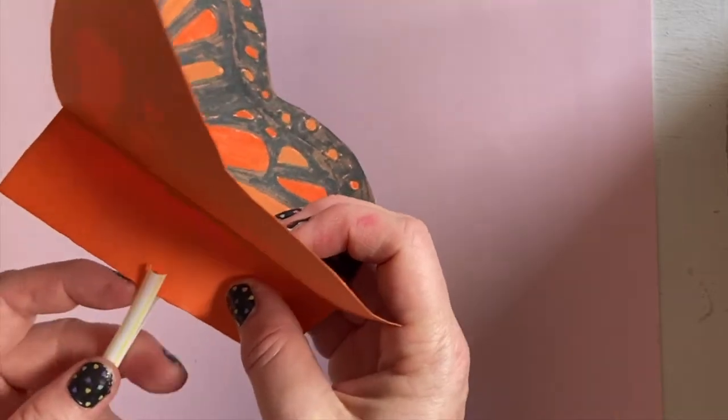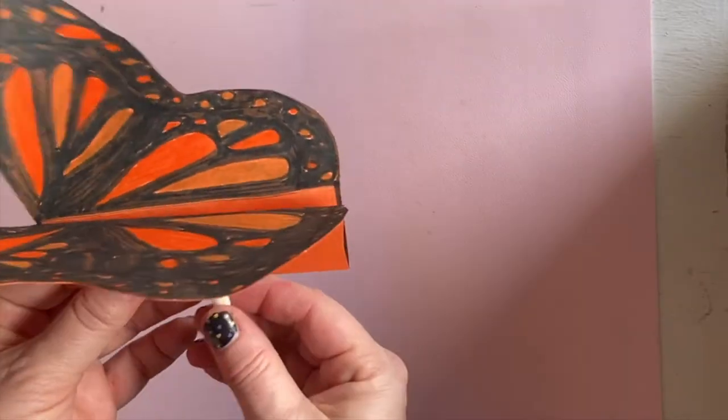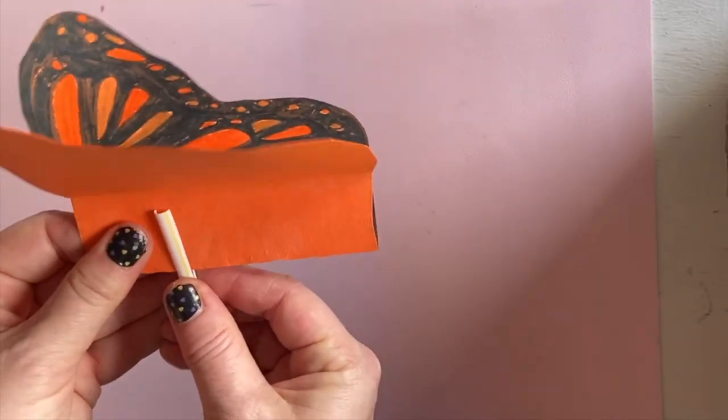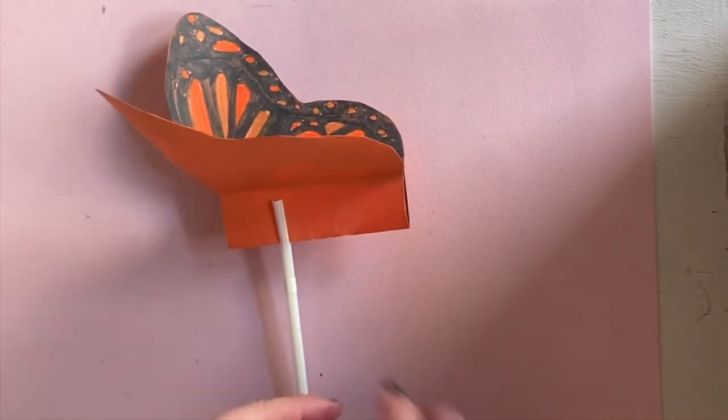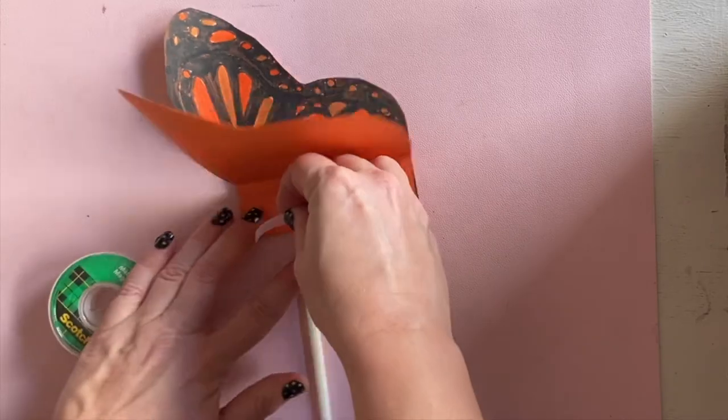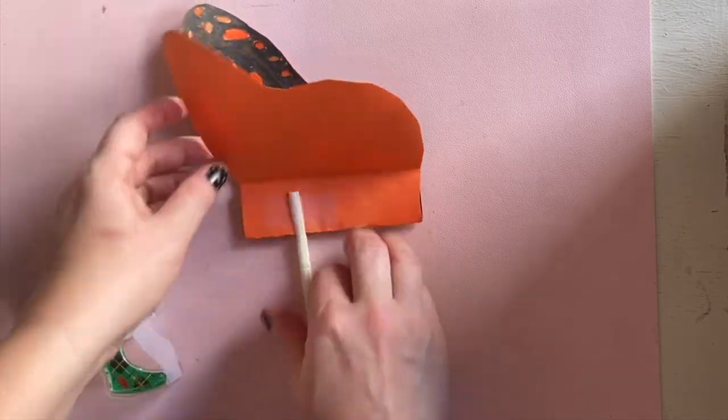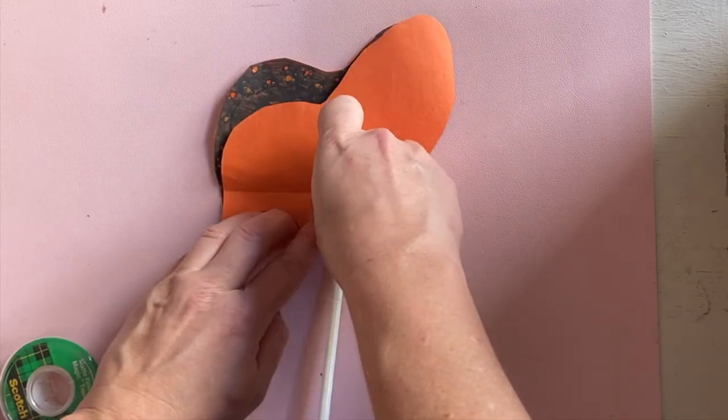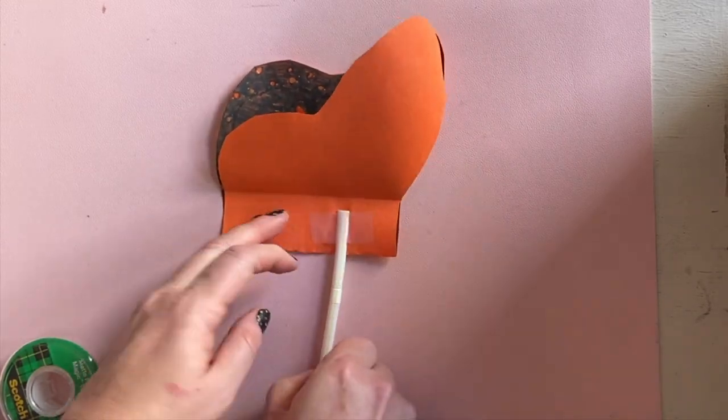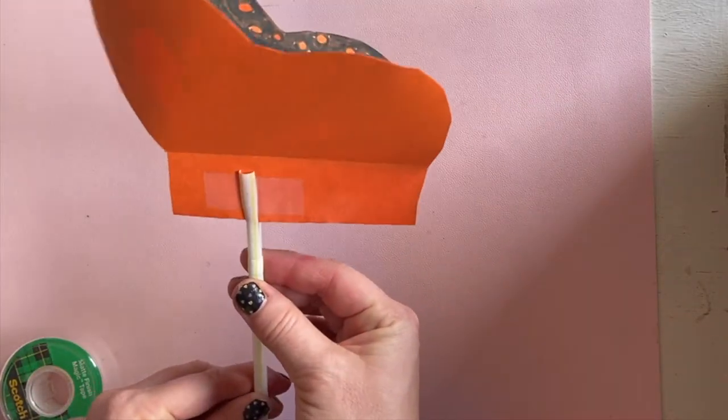If you're using a bendy straw, be sure that the bendy flexible side is right here. Make sure that this little straw does not go past the fold. Secure it with tape really well. Flip it over and secure with tape on the other side. That will hold the butterfly up.